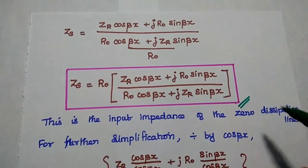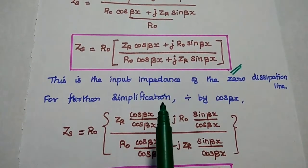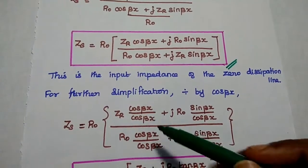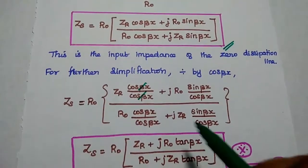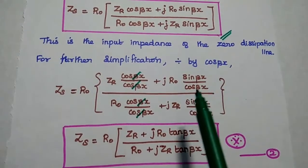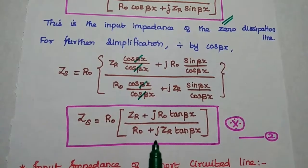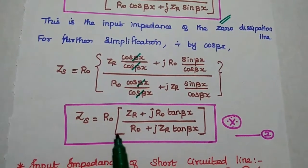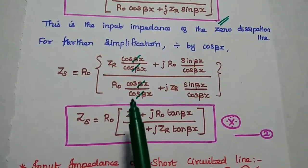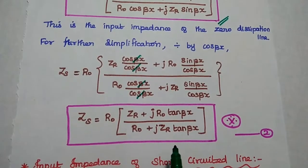This is the input impedance of the zero dissipation line at high frequency. For further simplification, we can divide the numerator and denominator by cos(βx). Then sin(βx) by cos(βx) is nothing but tan(βx). Finally, the input impedance for the dissipationless line is Zs equal to r0 into Zr plus j·r0·tan(βx), divided by r0 plus j·Zr·tan(βx). This is the final formula for the input impedance.